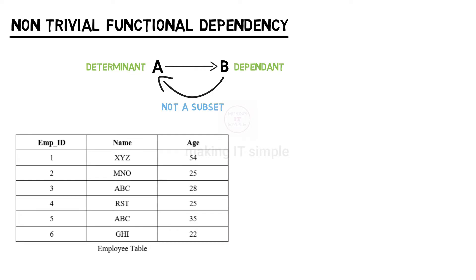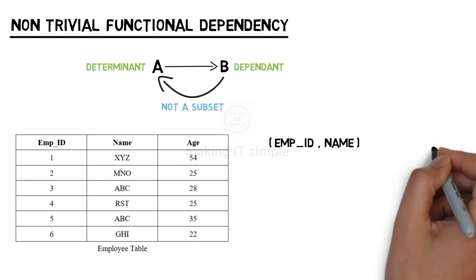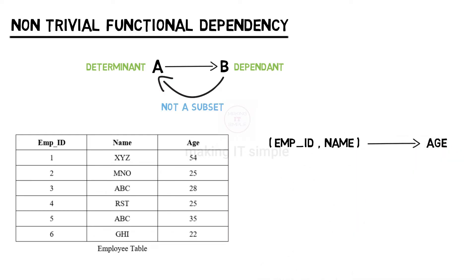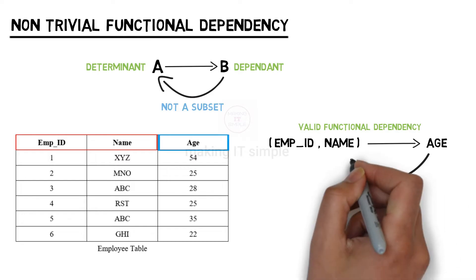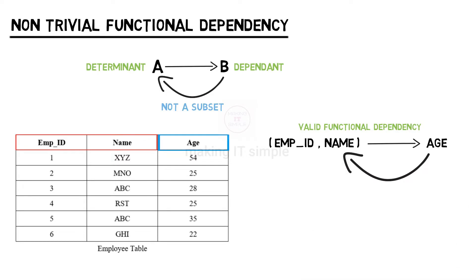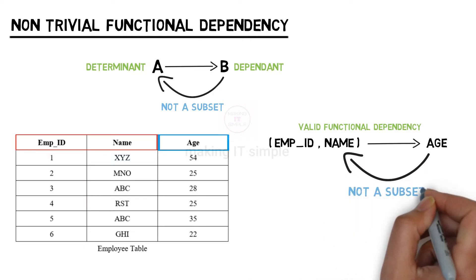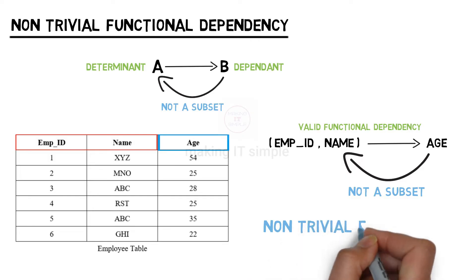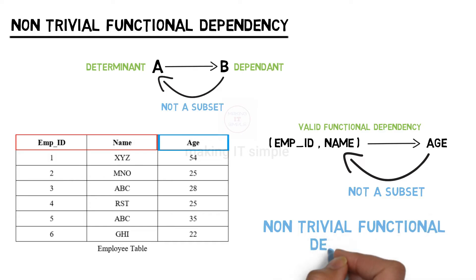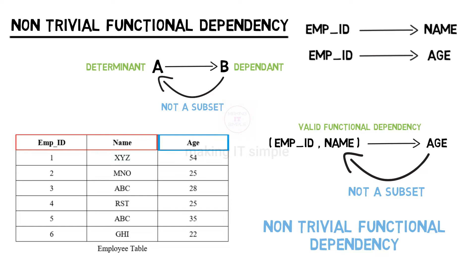Consider the same employee table. Let us take another Functional Dependency: Employee ID and Name determine Age. We can determine Age using Employee ID and Name, so it is a valid Functional Dependency. If we observe the dependent, Age is not a subset of the determinant Employee ID and Name — the dependent attribute is not present in the determinant. Such dependencies are Non-Trivial, where we are finding something we don't already know. Employee ID determines Name, or Employee ID determines Age, are also valid non-trivial Functional Dependencies in this table.